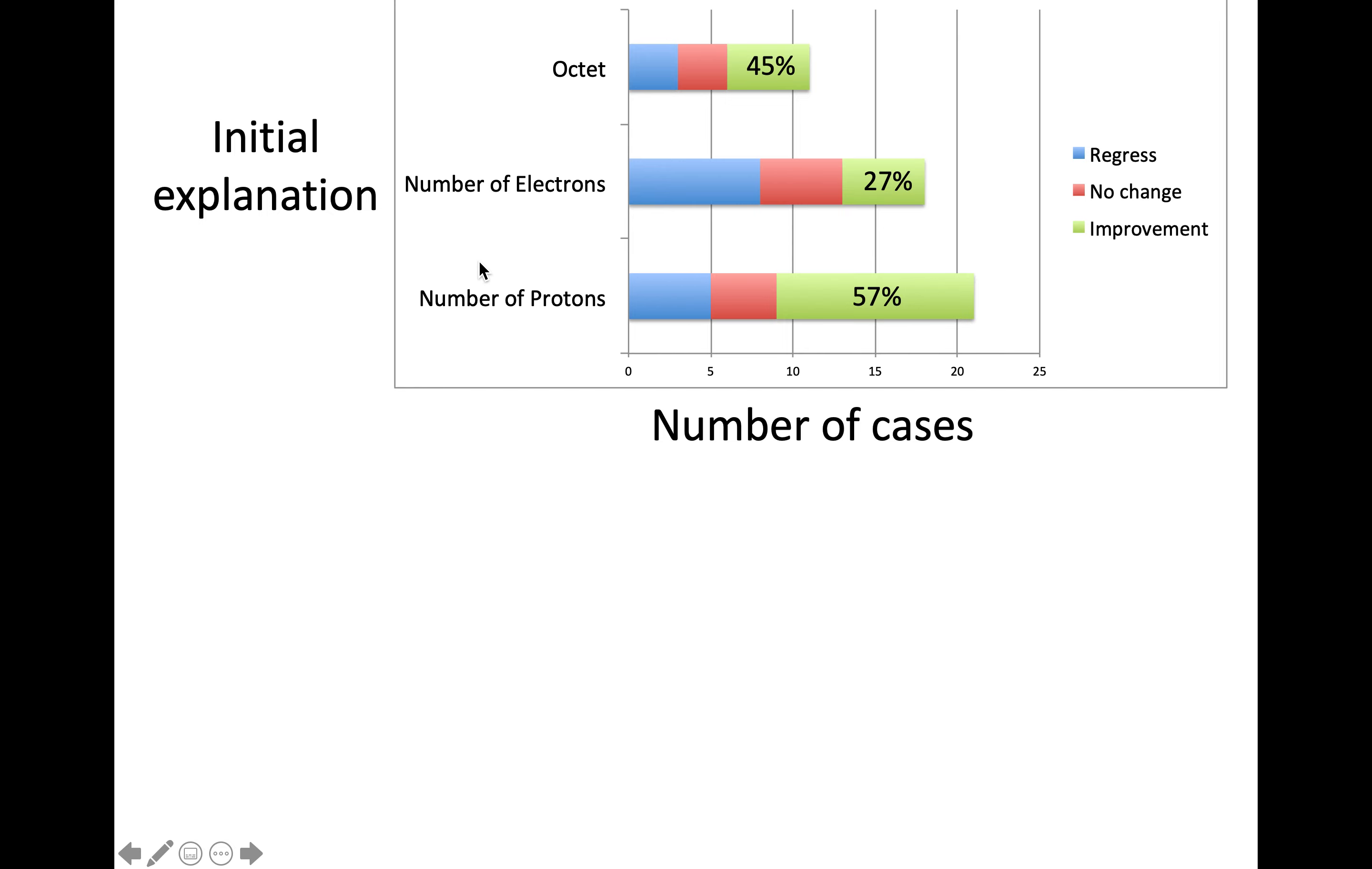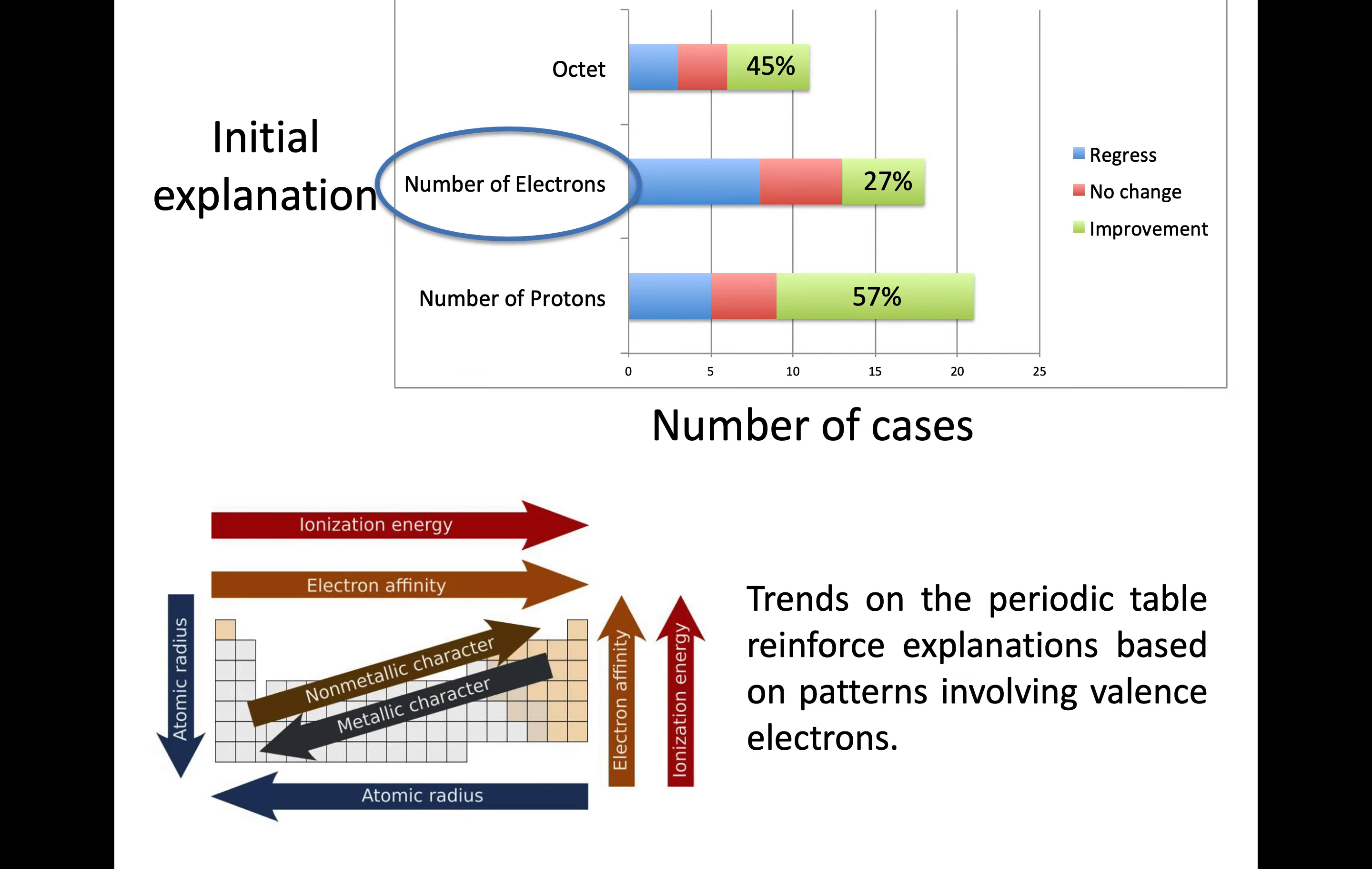That can be shifted from protons to effective nuclear charge readily. If the initial explanation was predominantly about the pattern of electrons, it was more difficult to see improvement. Number of electrons is definitely a barrier. These students are very proficient at determining electron configuration and drawing periodic trends on the periodic table. When drawing arrows on the periodic table, students aren't seeing the number of protons—they're looking for patterns based on valence electrons. These patterns seem to work, making it difficult to move to a stronger explanation.